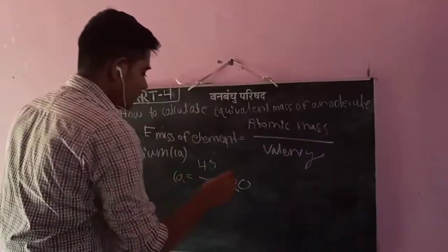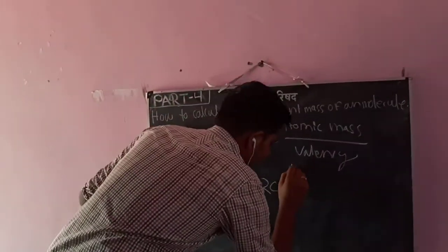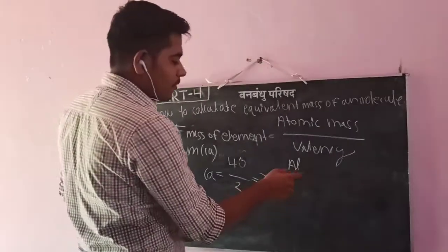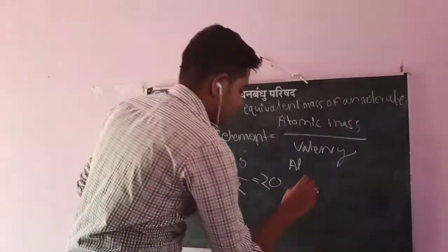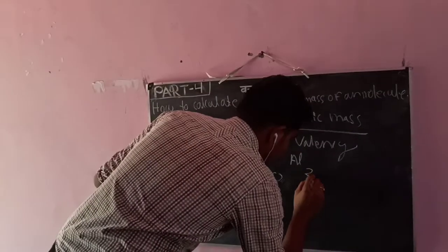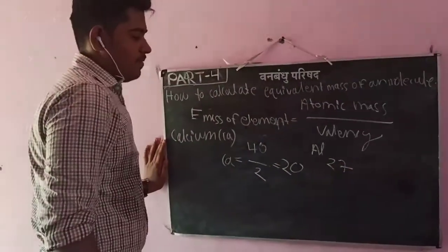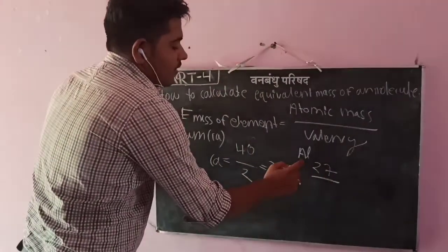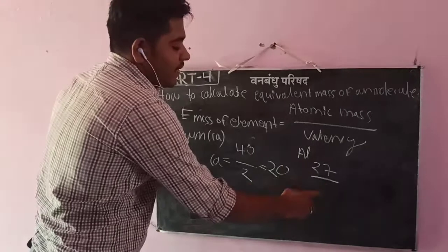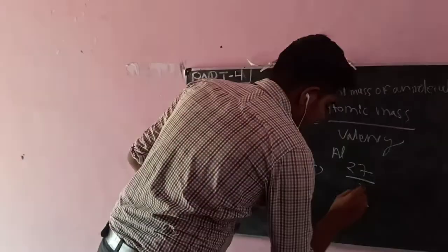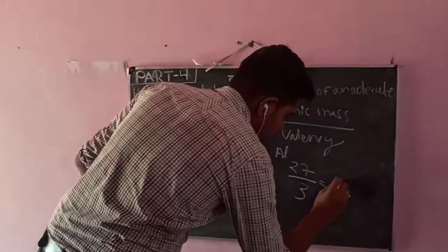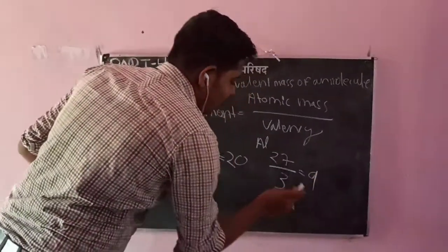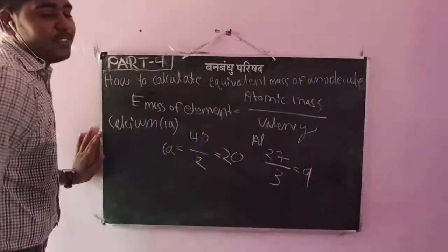Now, Aluminium. Aluminium's atomic mass is 27, divided by Aluminium's valency which is 3. This gives us the Equivalent Mass of Aluminium, which is 9.